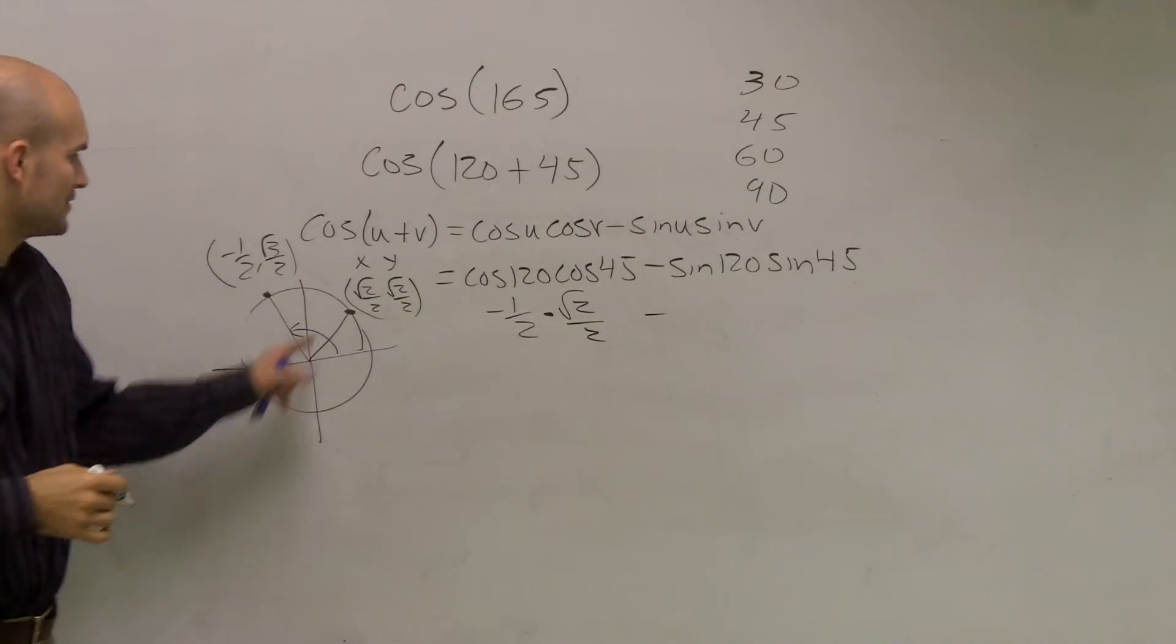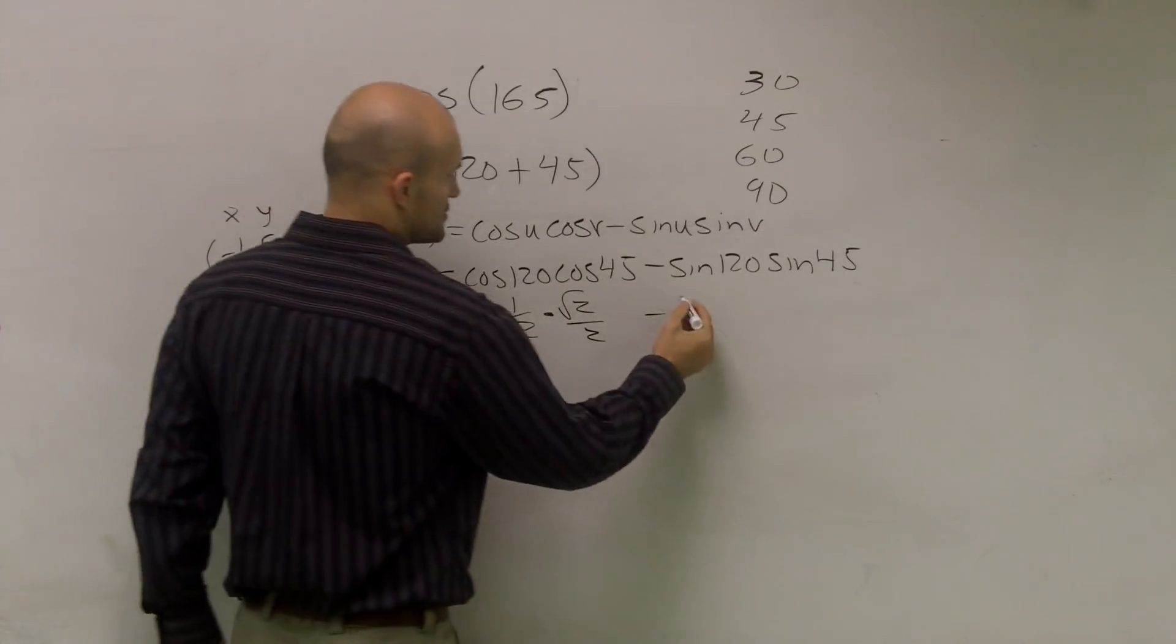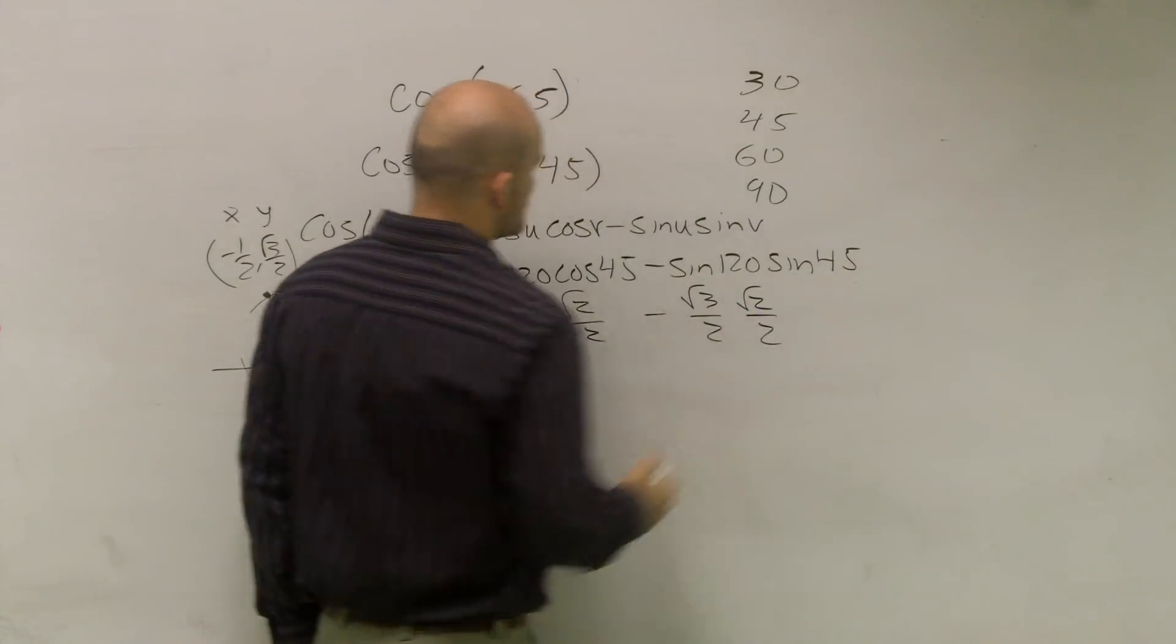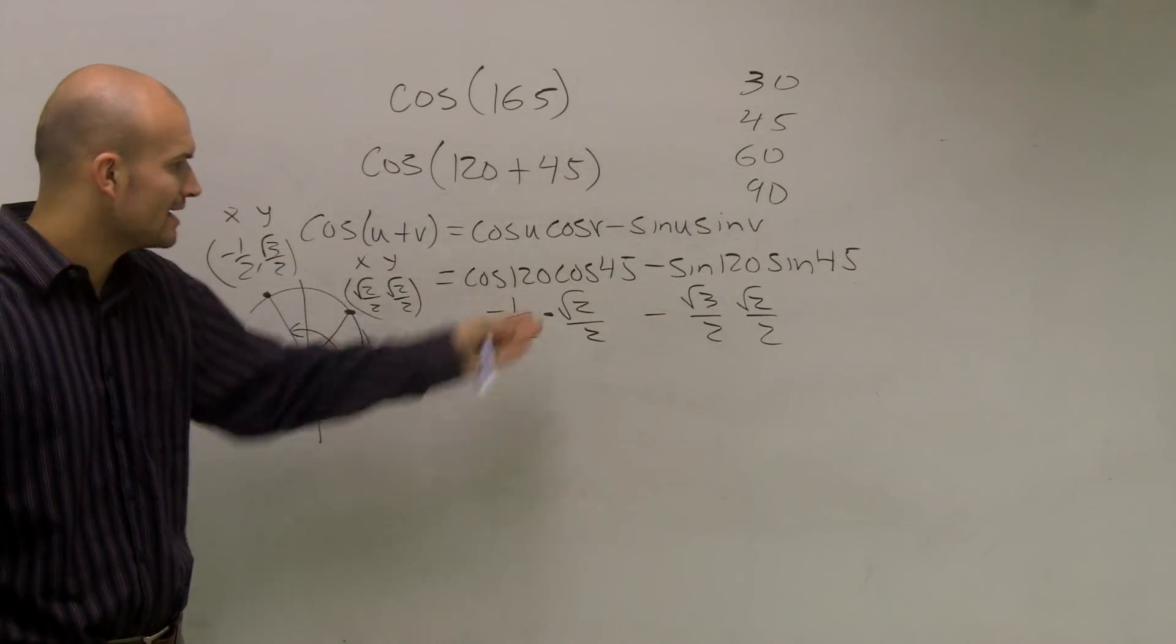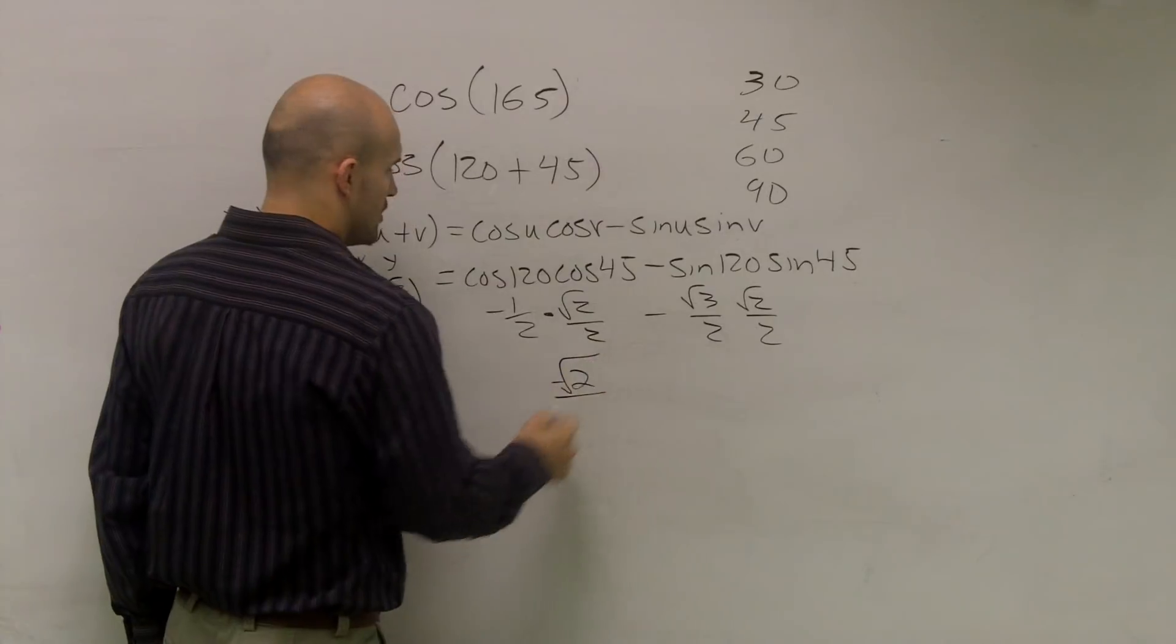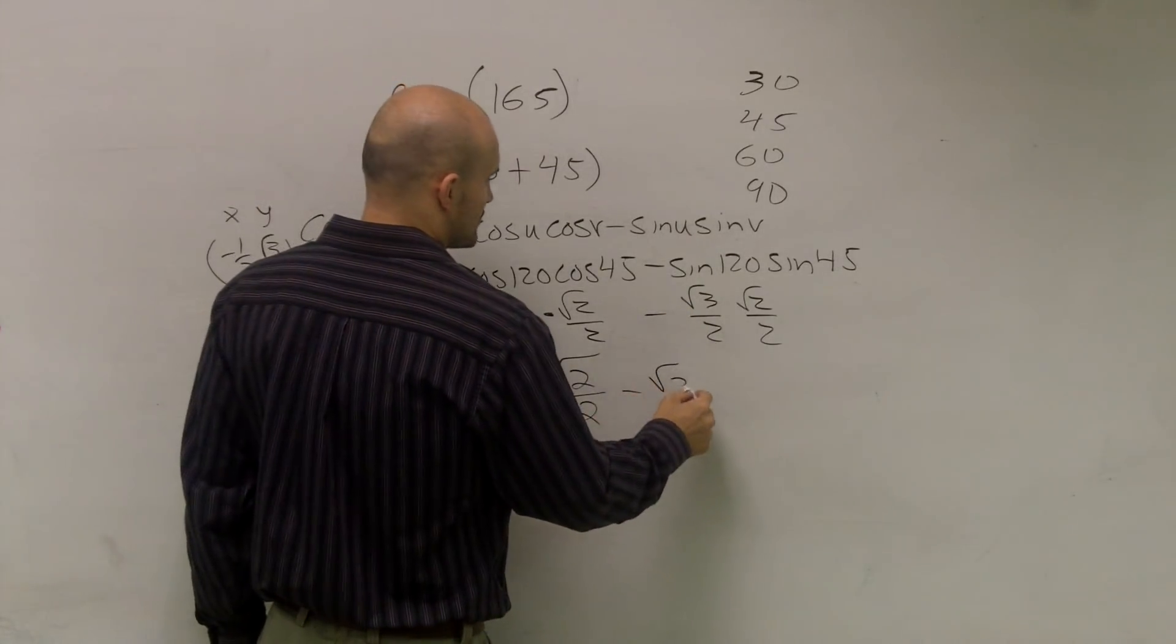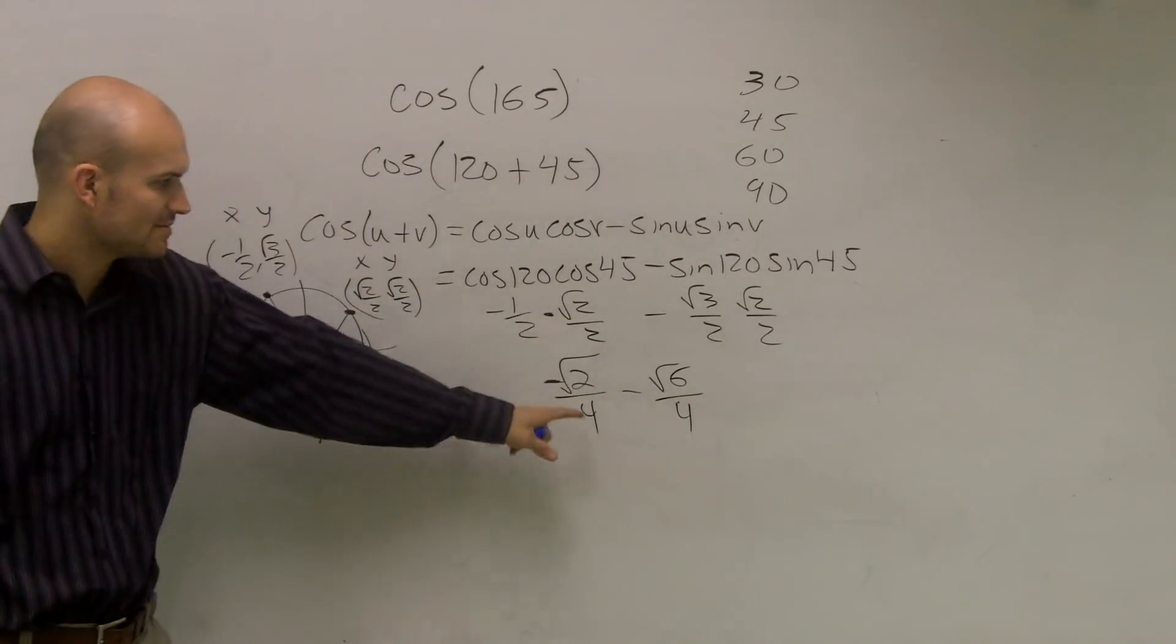Minus the sine of 120 degrees is now going to be the y coordinate of this point, which would be radical 3 over 2 times the sine of 45 degrees, which is radical 2 over 2. So now what we simply can do is take a look at our problem, and what I can do is multiply this out. So this becomes negative radical 2 over 2 minus radical 3 times radical 2 is going to be radical 6 over - 2 times 2 is going to be 4.